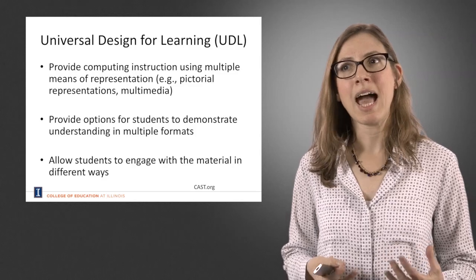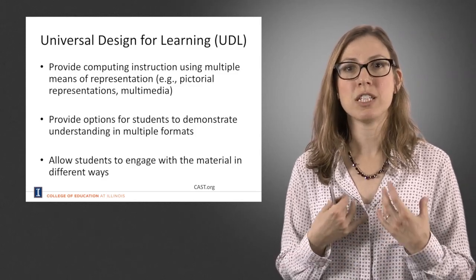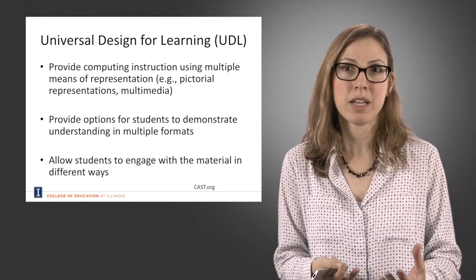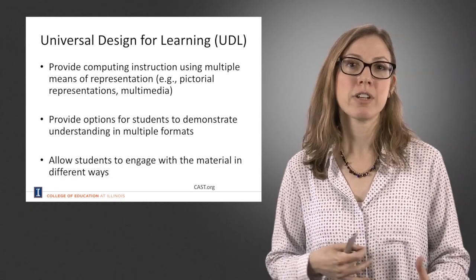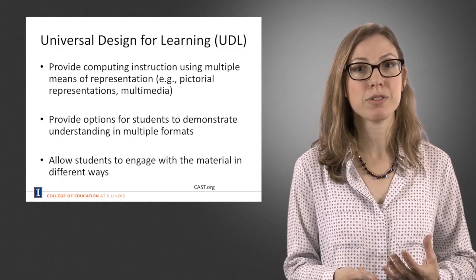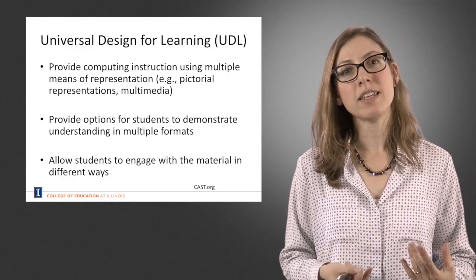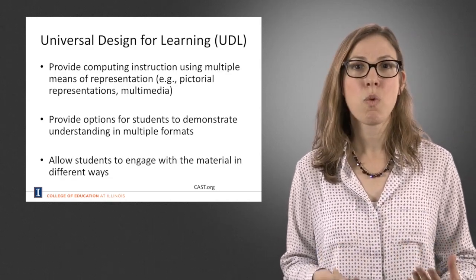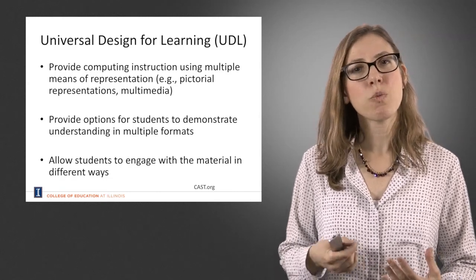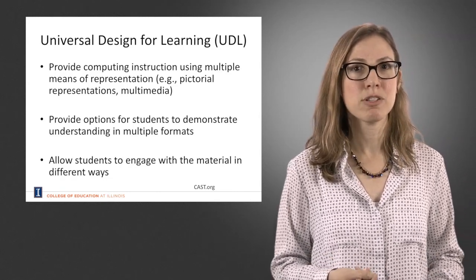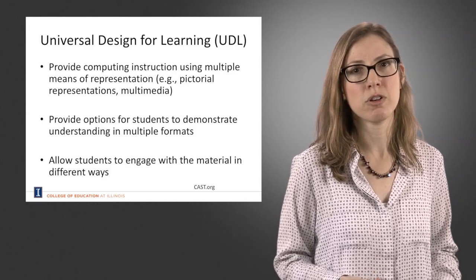The strategic network is the how of learning. If we think about how students are showing us that they understand something, we know they're going to be able to do that in different ways, and they're going to have different preferences, which means we have to assess them in different ways. And then the affective network, which is really the why of learning — this is about motivation. What is it about learning that's going to make students really want to learn?